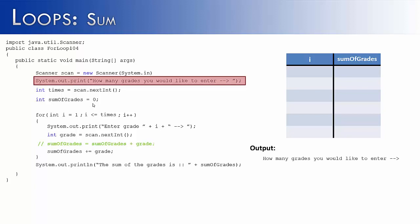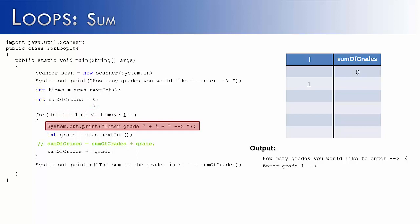First we'd start with how many grades would you like to enter, our prompt. And then I'm going to say I'd like to enter in four grades, so I put in four. To start with, the sum of grades is going to be zero. Now we enter our loop, so i is one. i is less than times, because times is four. We're going to enter in the grade, and the first grade that we're going to enter in is going to be 100. So when we get here, we're going to say zero plus 100 is equal to 100. So sum of grades is now 100.